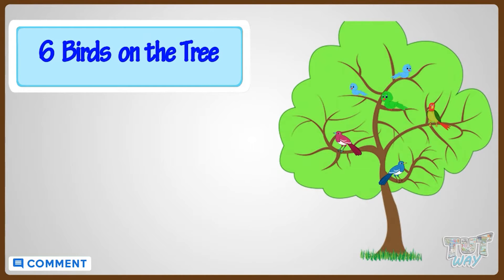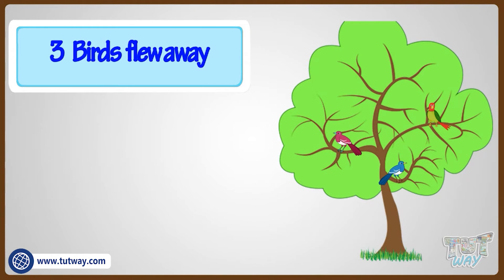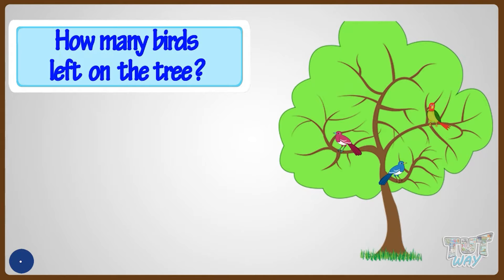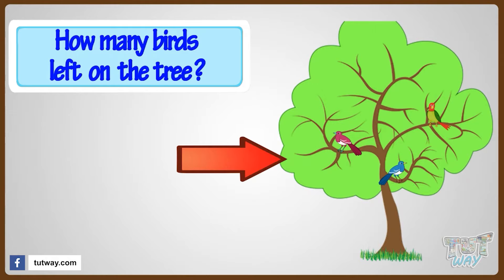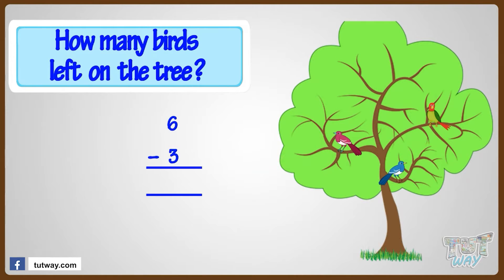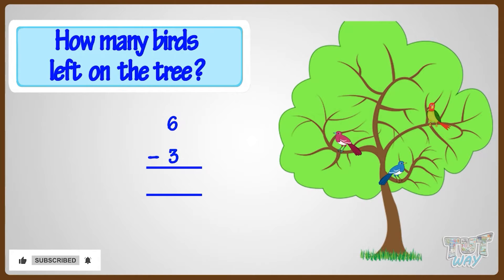Now let's take another example. There are six birds on the tree. Three birds flew away. How many birds are left on the tree? First, write it like this, with the bigger number first.